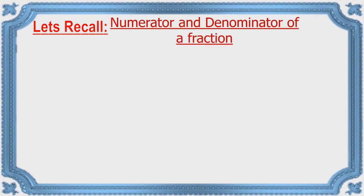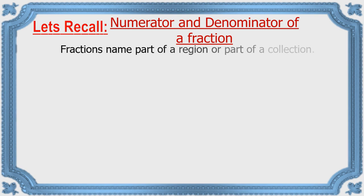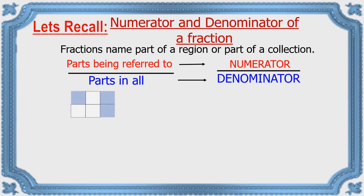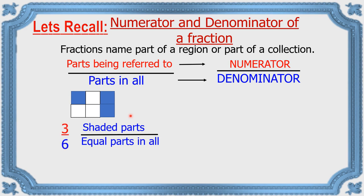Let's recall numerator and denominator of a fraction. Fractions name part of a region or part of a collection. Parts being referred to, and parts in all, gives us the fraction. We write parts being referred to on top — that is called the numerator — and parts in all at the bottom — that is called the denominator.